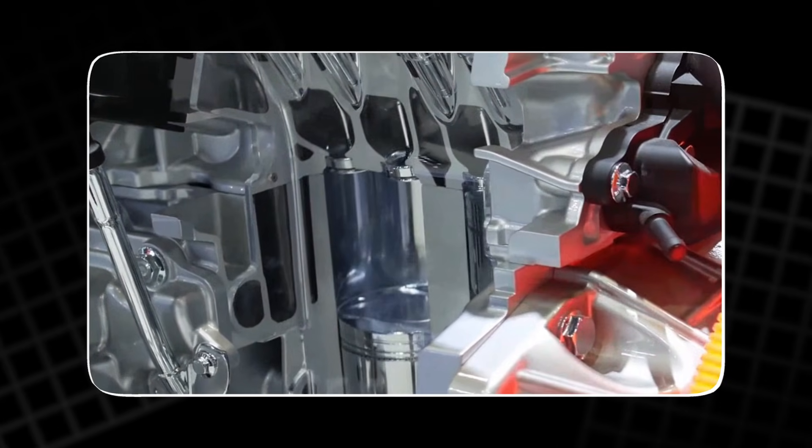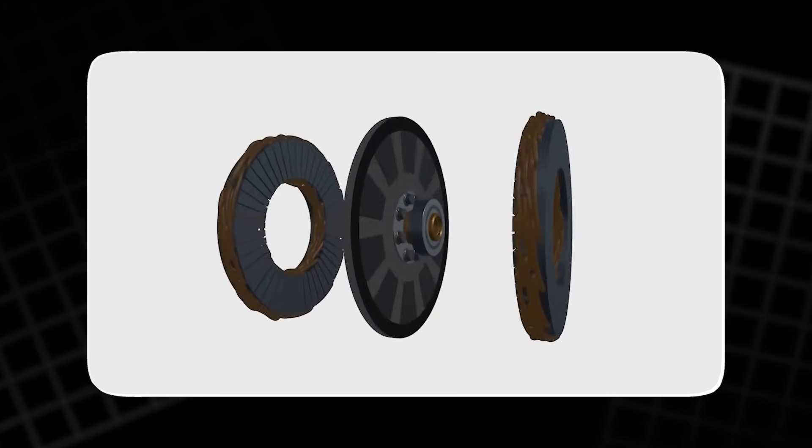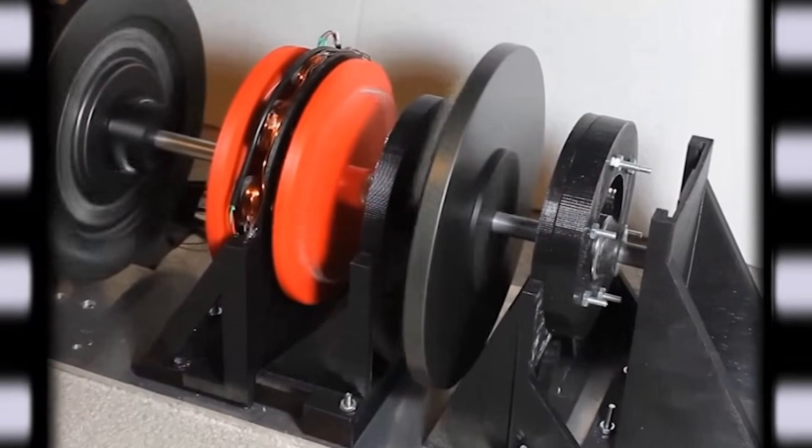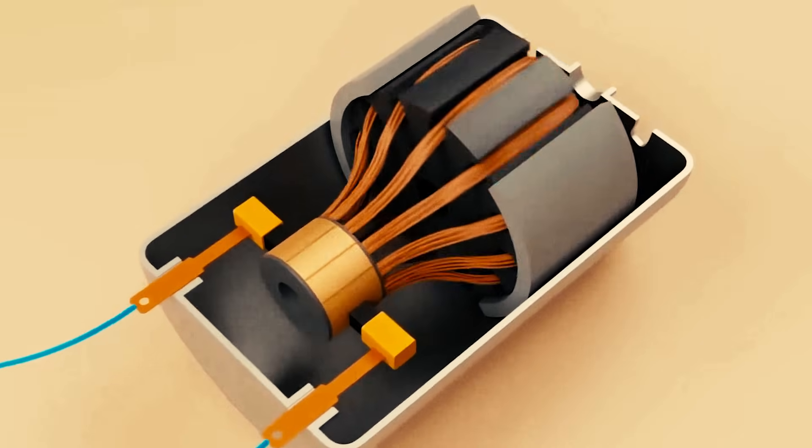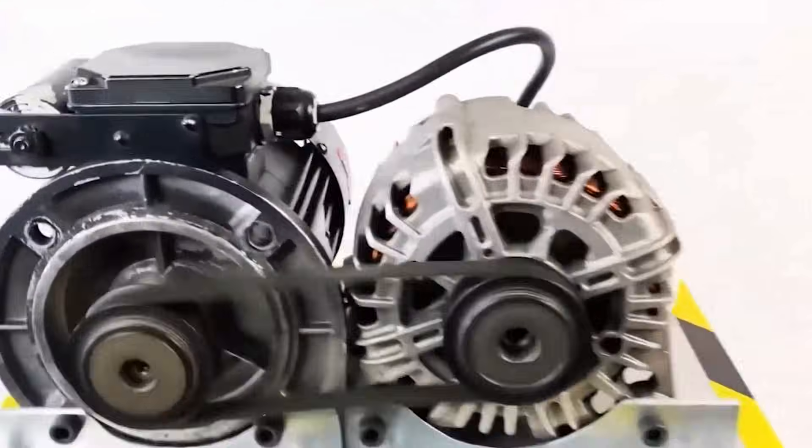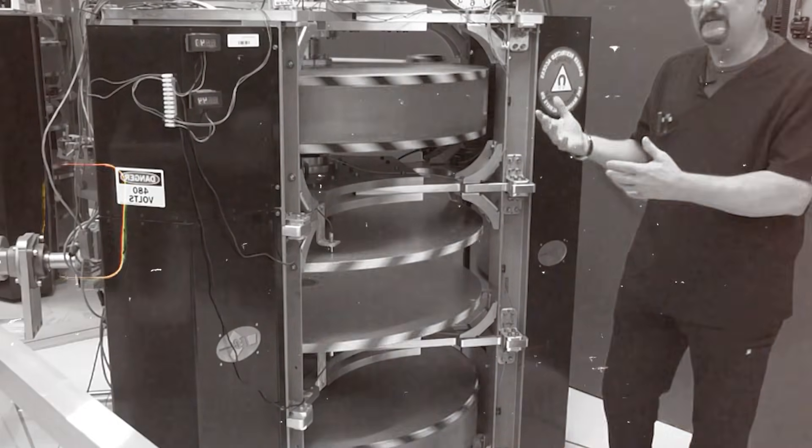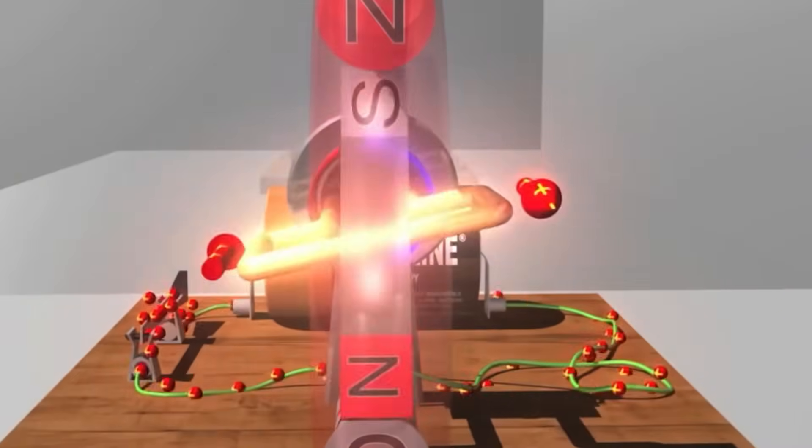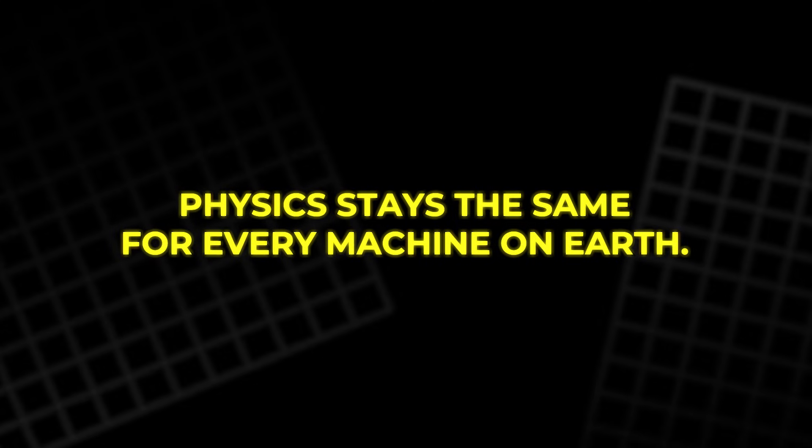In the end, the magnetic motor is not a miracle device. It is a story shaped by hope, misunderstanding, and the desire for simple solutions. People want free electricity because it would solve so many problems. That desire makes them believe in machines that cannot work. But the laws of energy do not bend for wishes. Motion does not create energy. Magnets do not produce endless power. Physics stays the same for every machine on Earth.